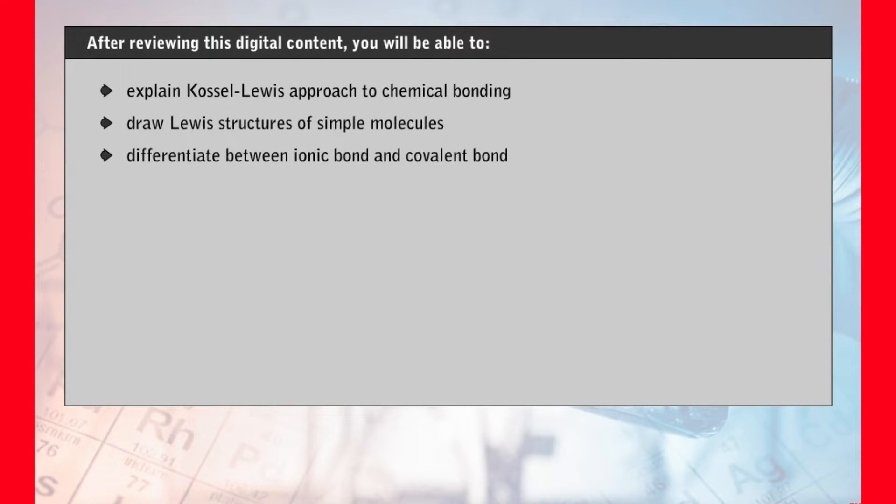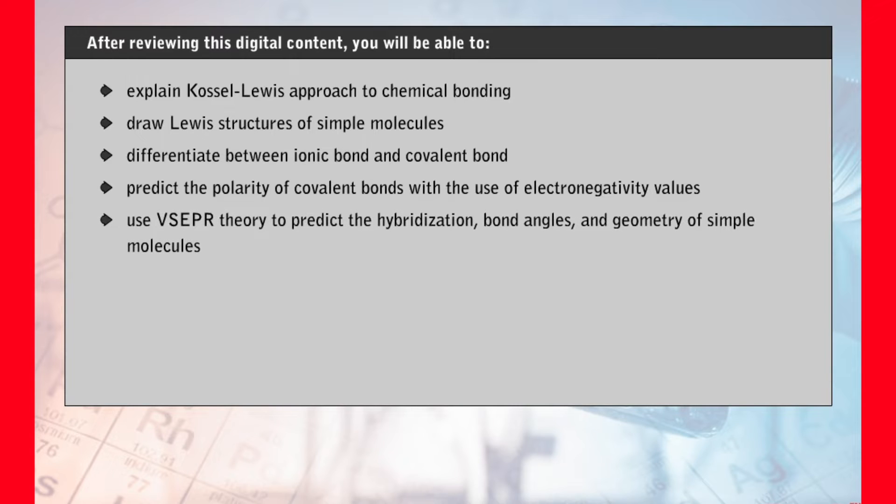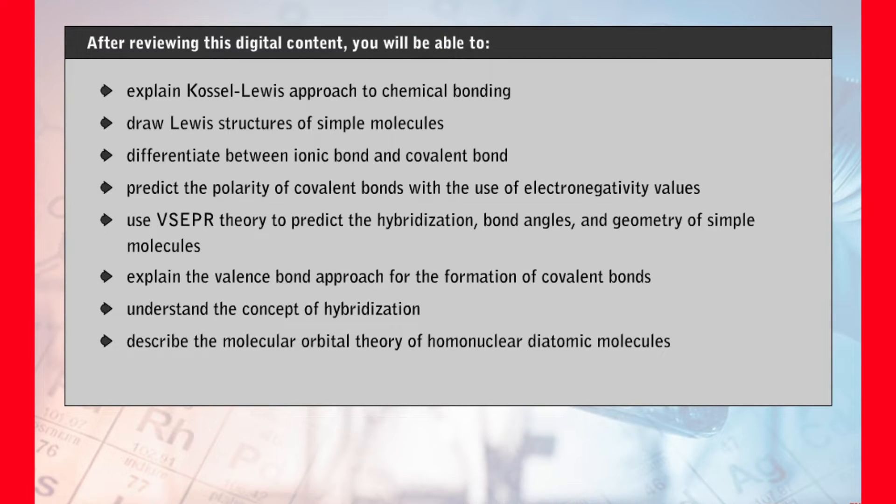After reviewing this digital content, you will be able to explain Kossel Lewis approach to chemical bonding, draw Lewis structures of simple molecules, differentiate between ionic bond and covalent bond, predict the polarity of covalent bonds with the use of electronegativity values, use VSEPR theory to predict the hybridization, bond angles and geometry of simple molecules, explain the valence bond approach for the formation of covalent bonds, understand the concept of hybridization, and describe the molecular orbital theory.